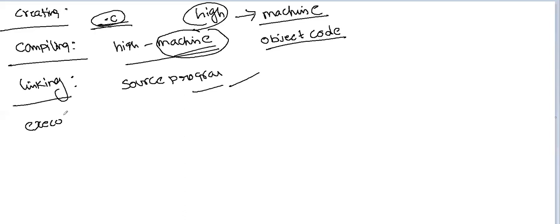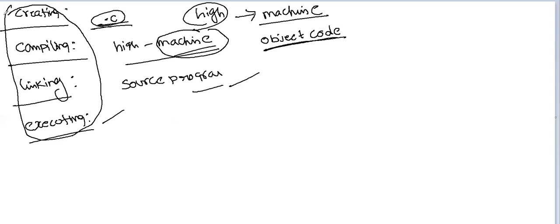The final step is executing. The object code is loaded into the memory and executes each and every instruction step by step. During execution, the user may enter information through the keyboard and the program produces output. These are the four steps required for completion of the process.